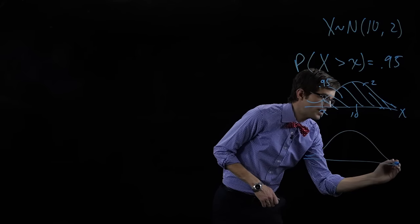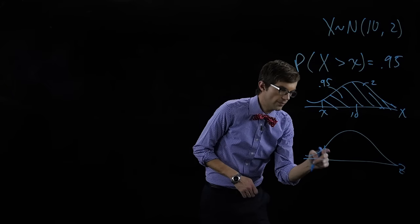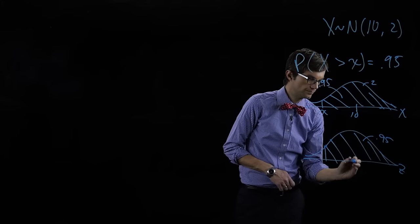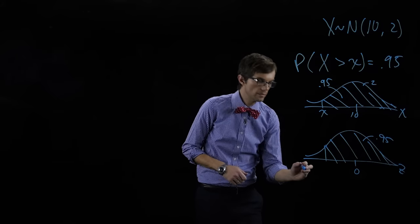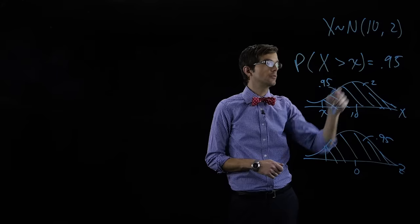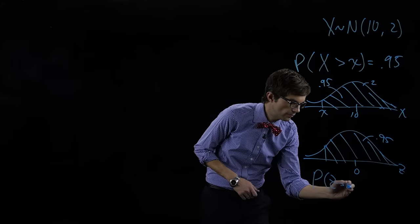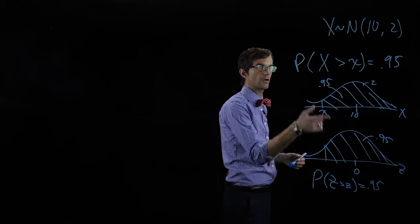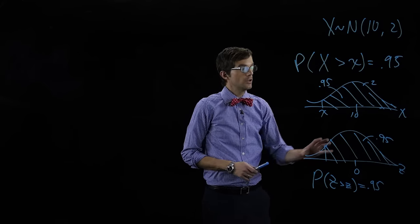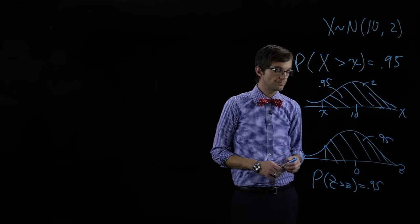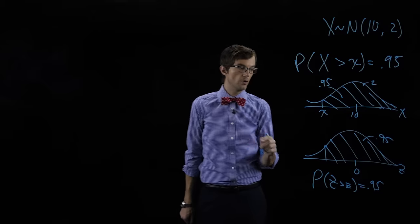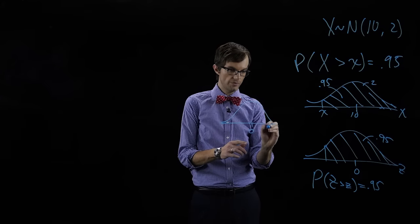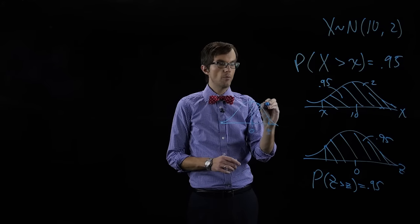We can convert this to a standard normal distribution, converting this value of x to a z value and find what this area might be. The probability that x is greater than x equals 0.95, which corresponds to the probability that z is greater than some value z equaling 0.95. We need to look up the z table, and we know the area between zero and z is 0.45.